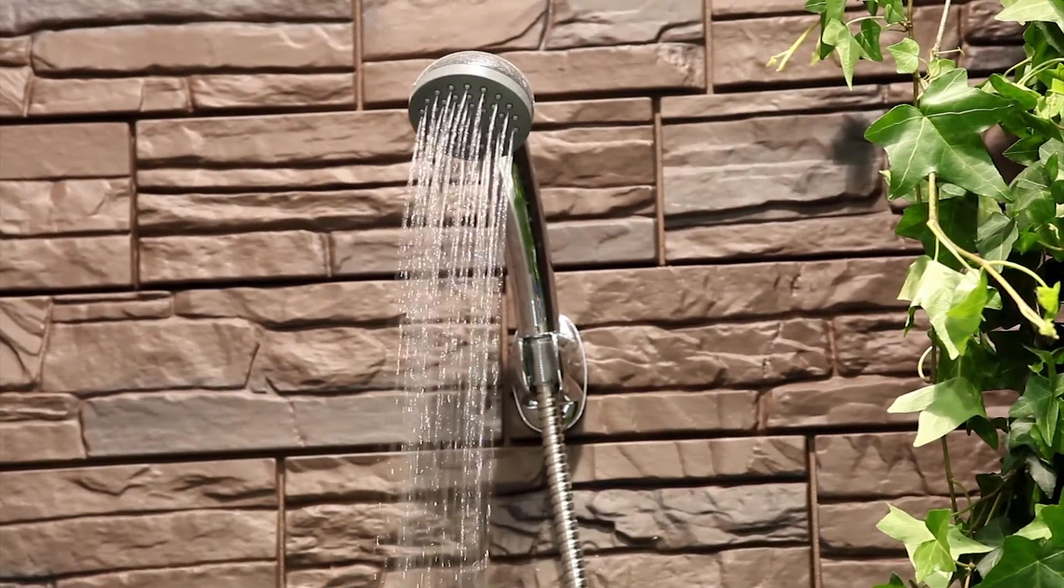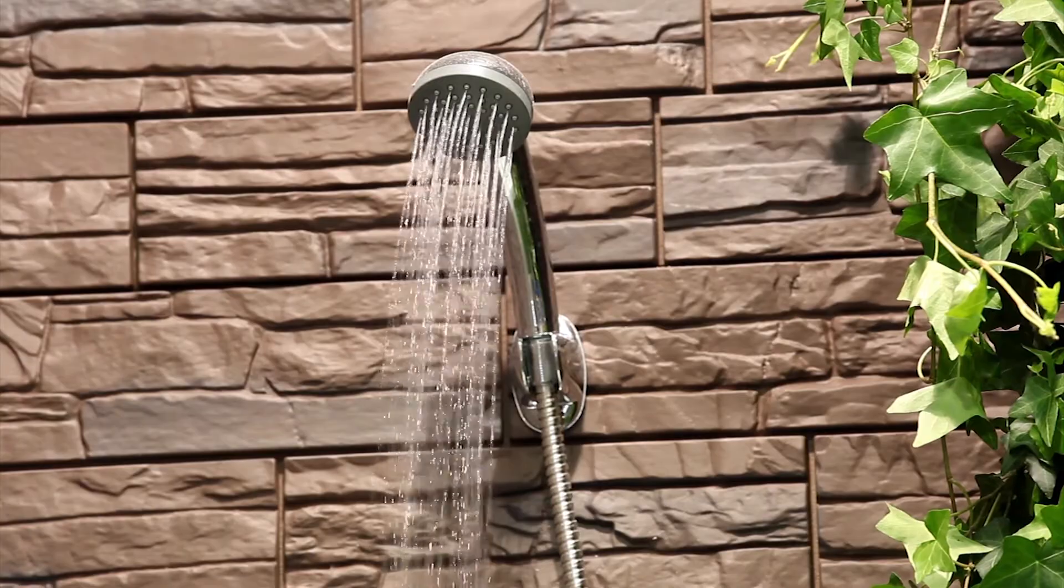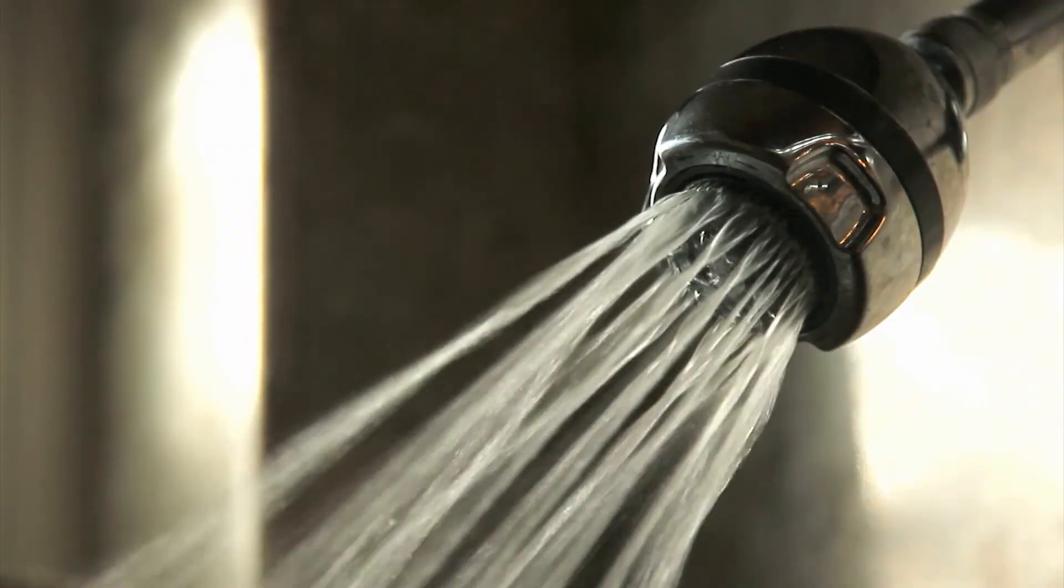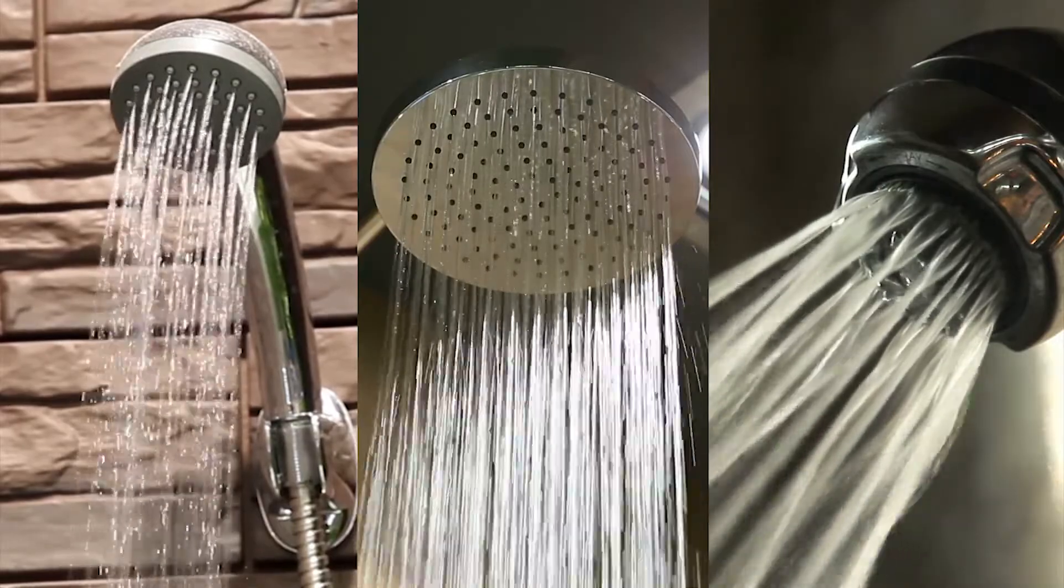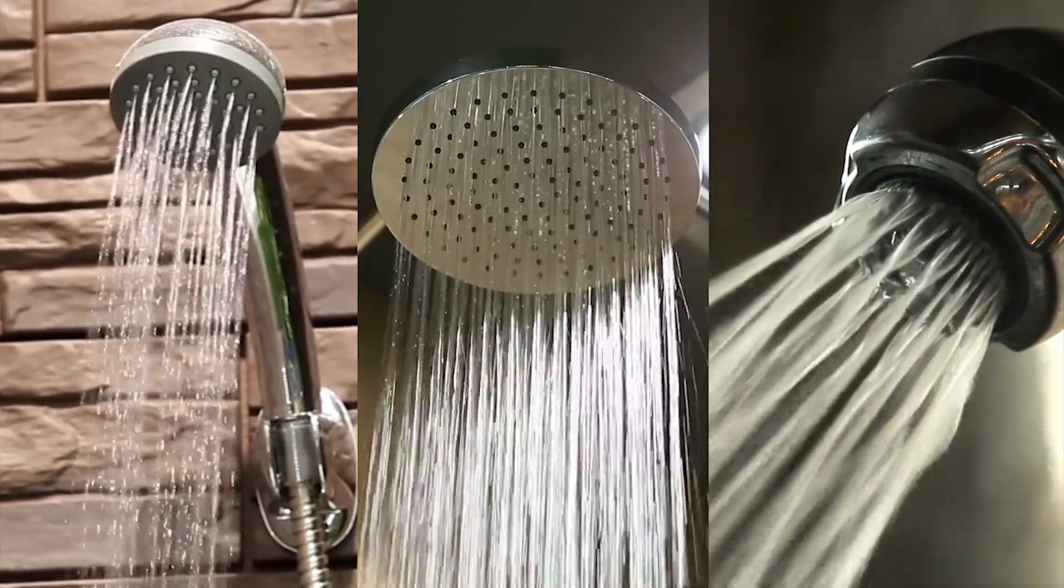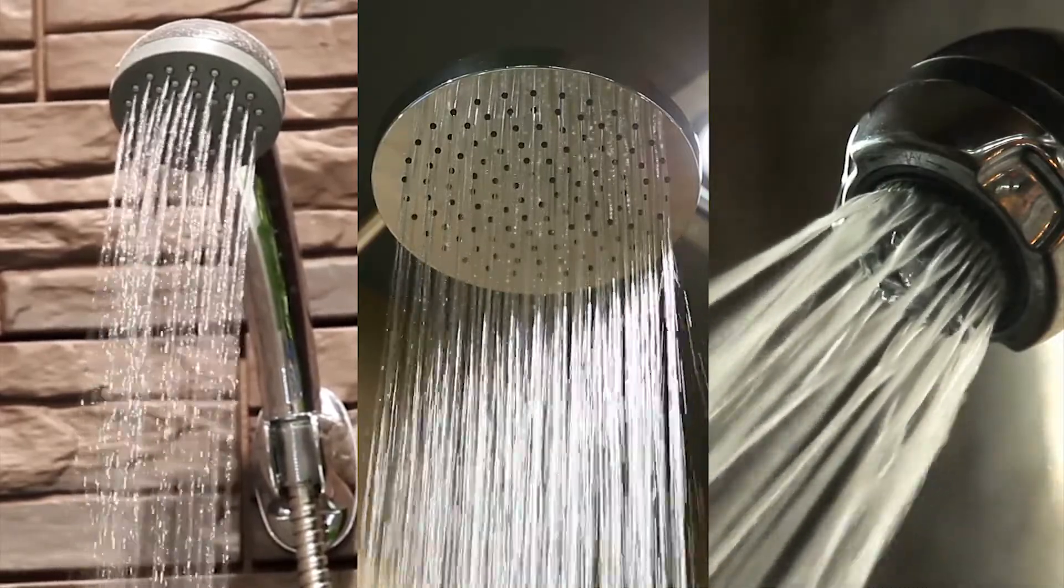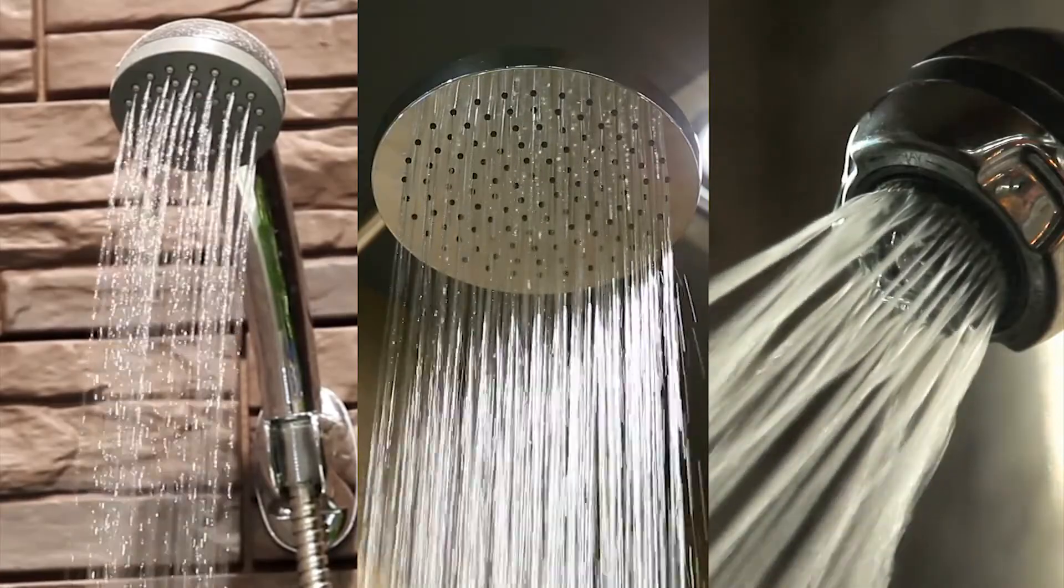Shower head flow rates vary from a very low flow rate of 1 GPM up to the standard 2 GPM. Most modern low flow shower heads are designed to give the same shower experience as higher flow models, so there isn't much difference between the three shown here.